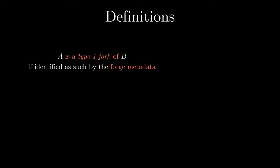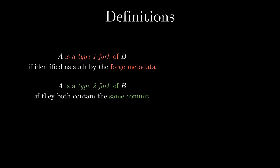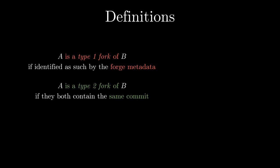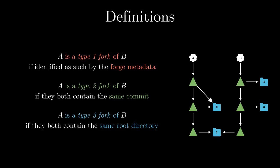Let's formally define the three types of forks we want to compare using this data model. The first type represents the usual approach: we say A is a forge fork of B when the forge metadata contains that forking relationship. For type 2 forks, we say A is a shared commit fork of B when they have at least one commit in common. For type 3 forks, we say A is a shared root directory fork of B when they both contain the same directory at the root level of one of their commits.